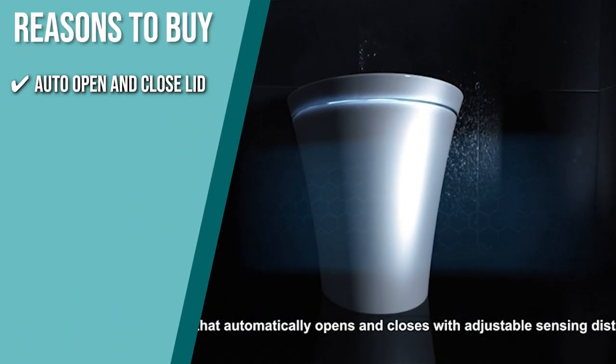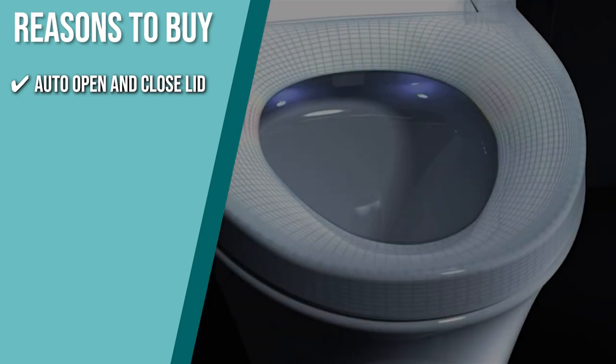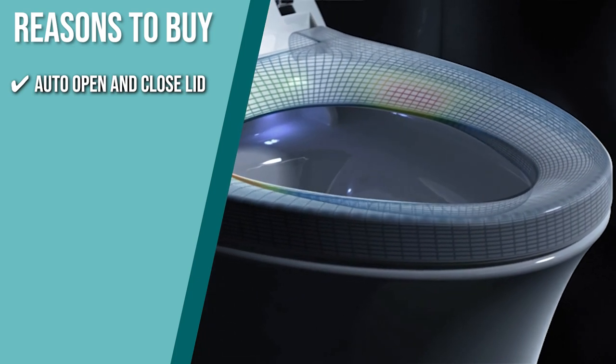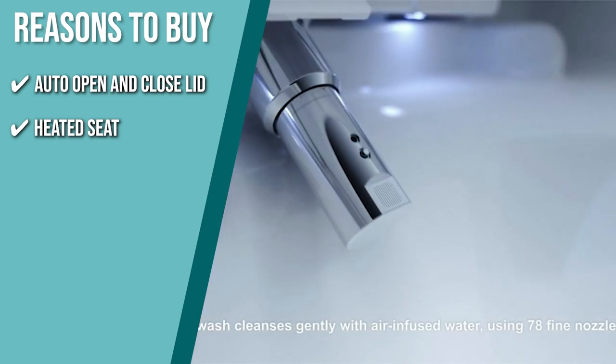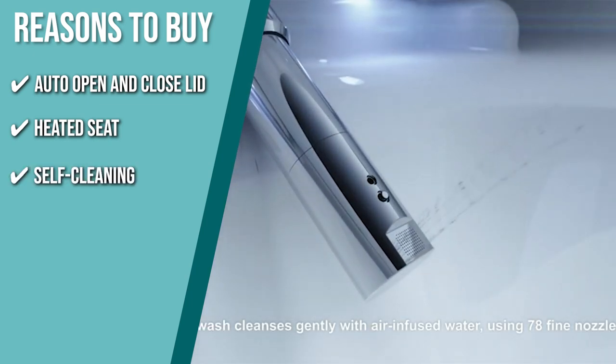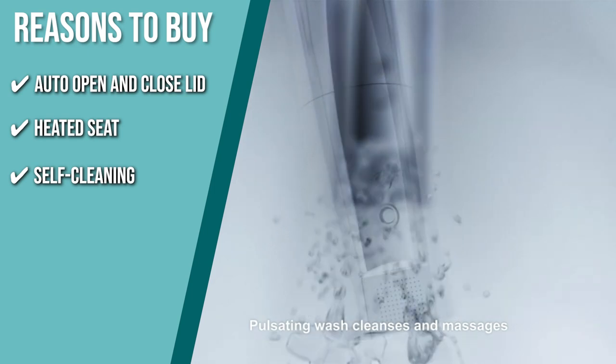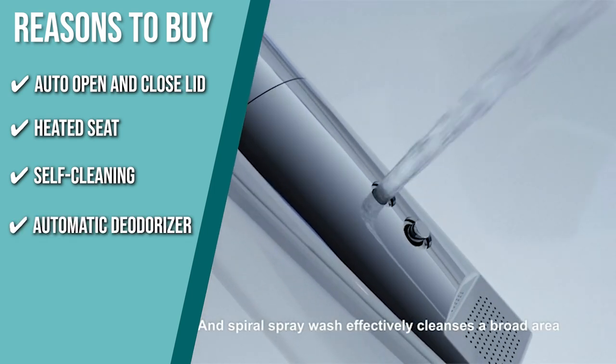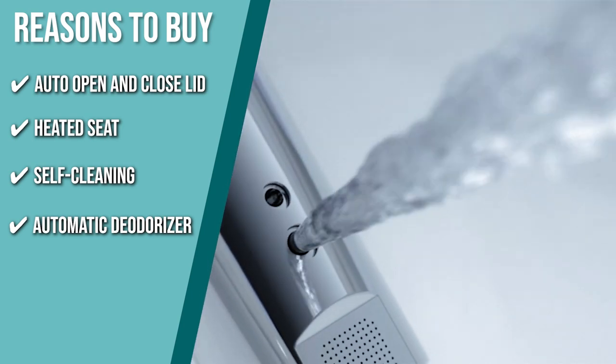Auto Open and Close Lid: The toilet lid will automatically open when you approach, and it will automatically close when you leave. If you prefer, you can turn off this function via the remote control. Heated Seat: You'll be sitting comfortably and warmly on its heated seat which also has an adjustable temperature to meet your needs. Self Cleaning: It has a stainless steel wand that rinses the toilet before and after you use it and automatically sanitizes itself every 24 hours with powerful UV light. Automatic Deodorizer: With this feature, you can keep your bathroom smelling fresh and clean after every use.